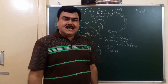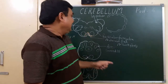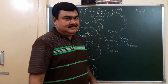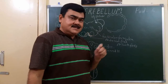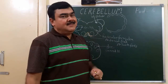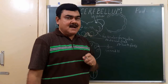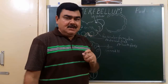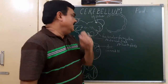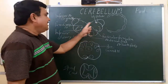Now we'll discuss about the connections of the cerebellum. This is part 6. In this section, we'll discuss about the fibers — nerve fibers passing through the inferior cerebellar peduncle.